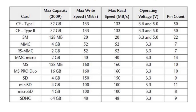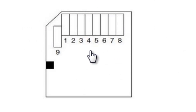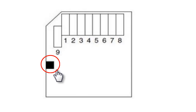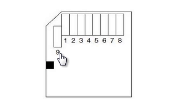Most SD cards and MMC, particularly those below 2GB, use the FAT16 standard, while those between 2GB and 2TB use the FAT32 standard. The SD card has 9 pins with a write-protect switch, which can be used to enable or disable writing to the SD card. A standard SD card can be operated in two modes: the SD bus mode and the SPI bus mode.